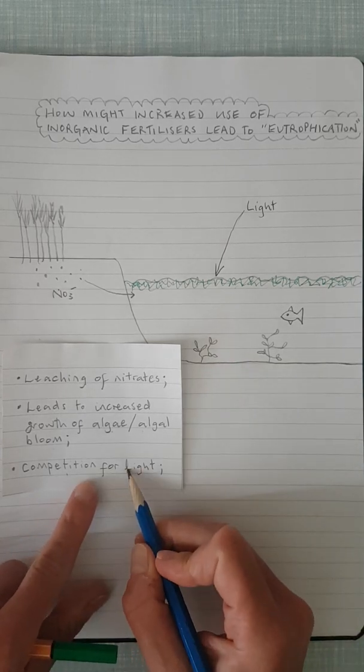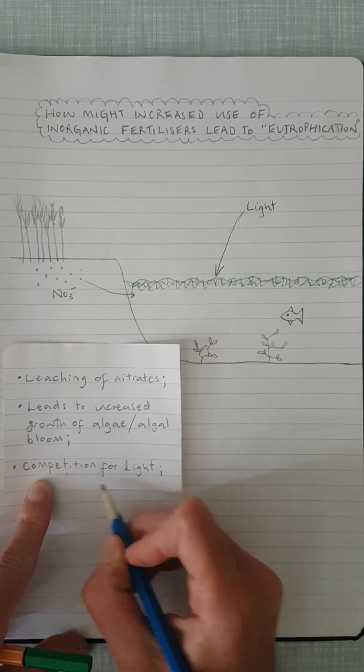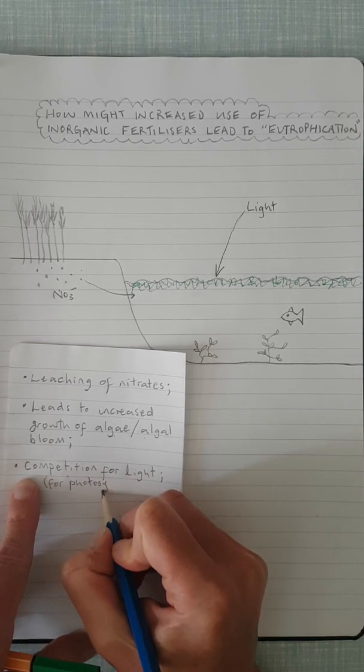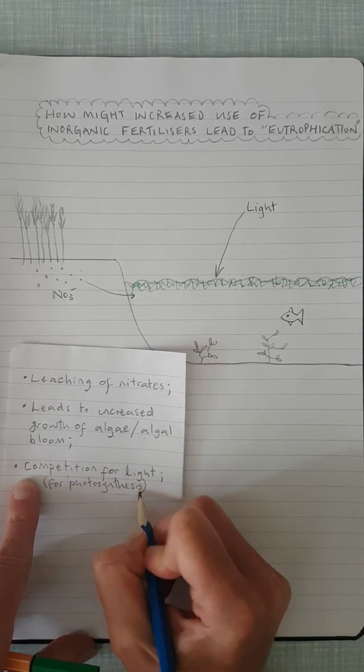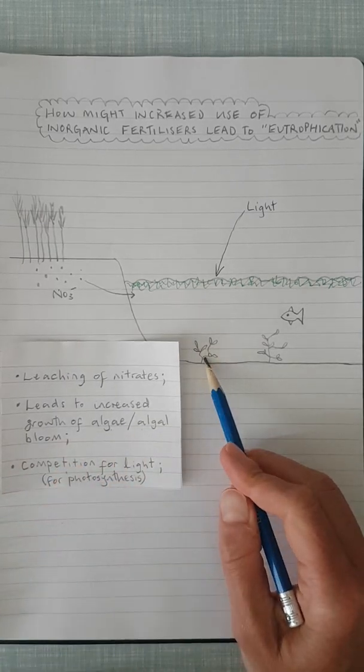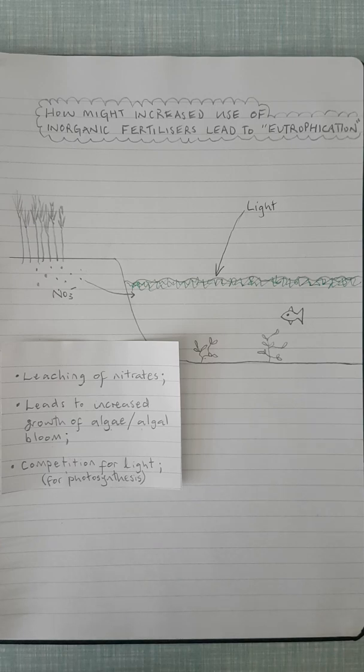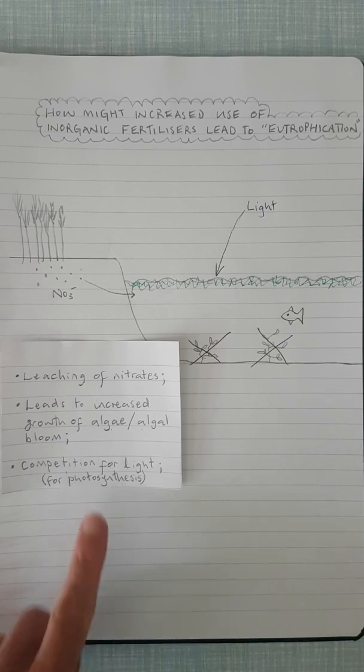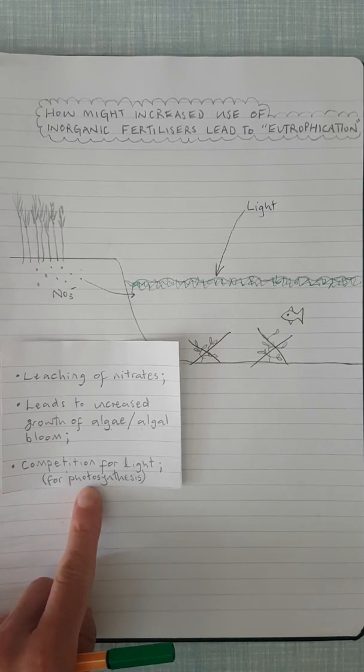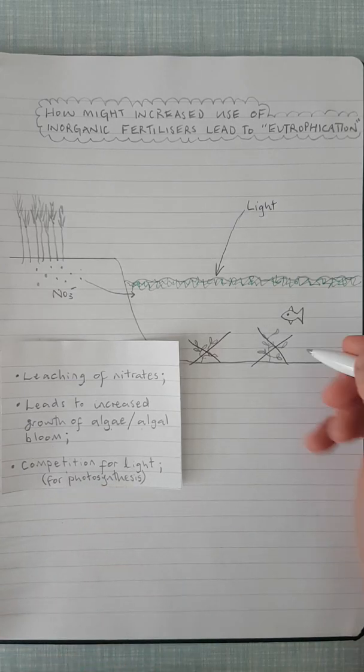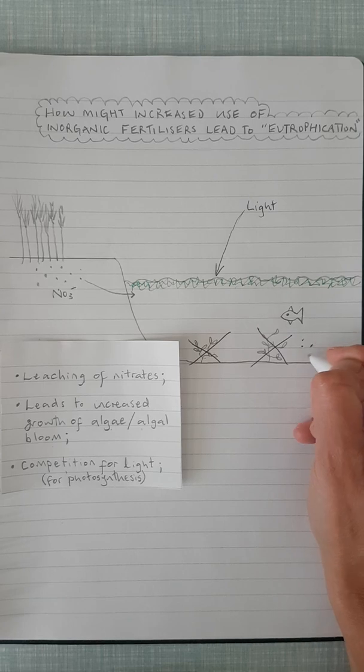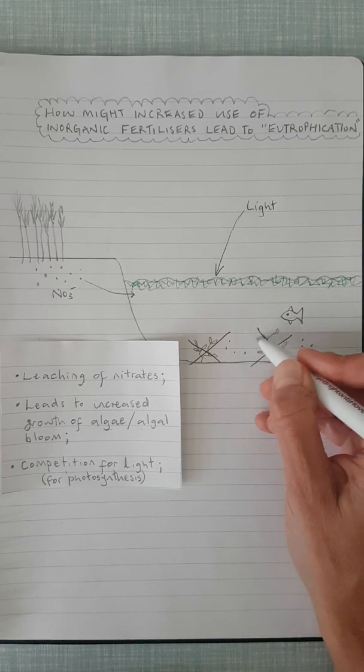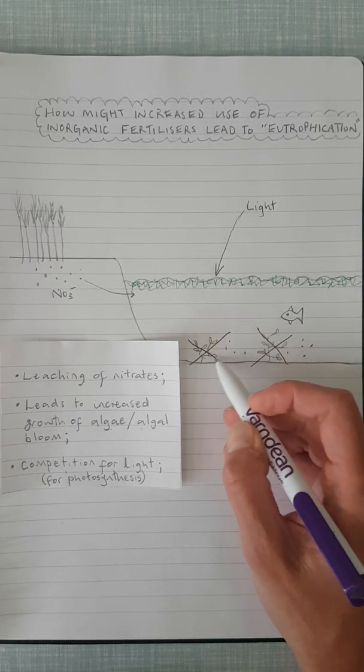Now remember, the light is needed for photosynthesis. Competition for light for photosynthesis. And if these plants at the bottom of this body of water can no longer photosynthesize, they will die. So I'm going to put a cross through those because they have died because they haven't been able to get enough light for photosynthesis.